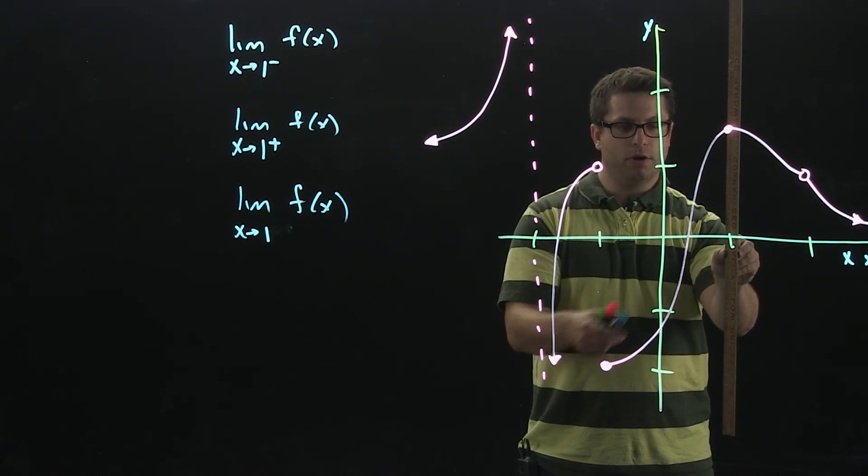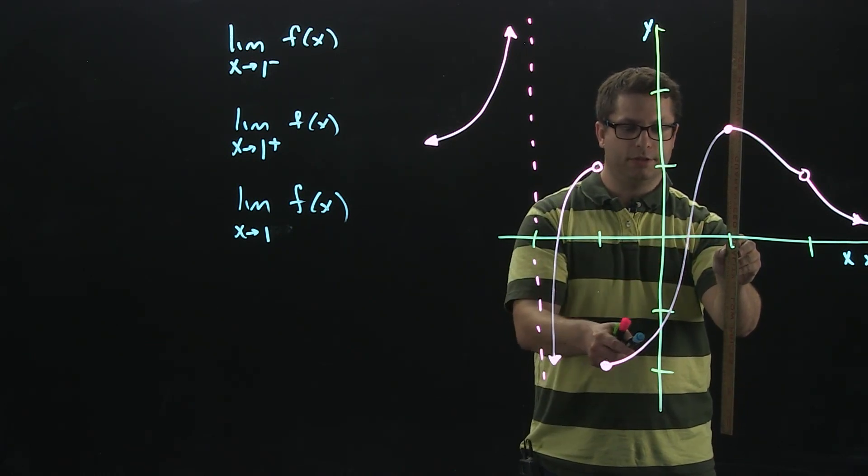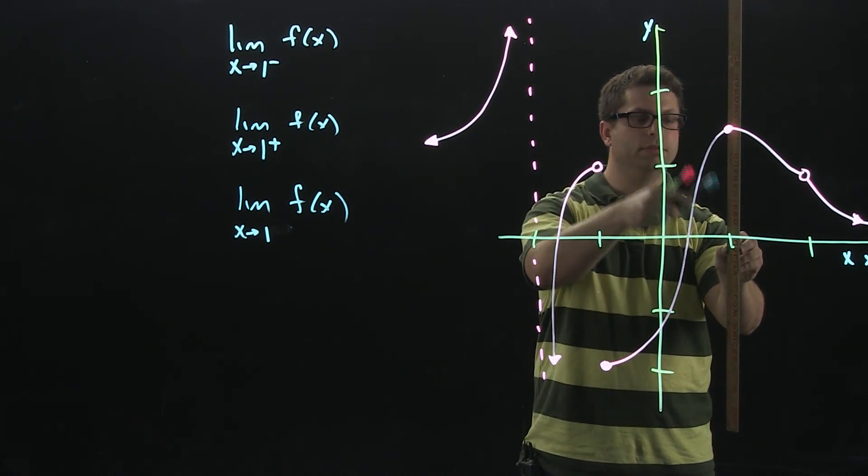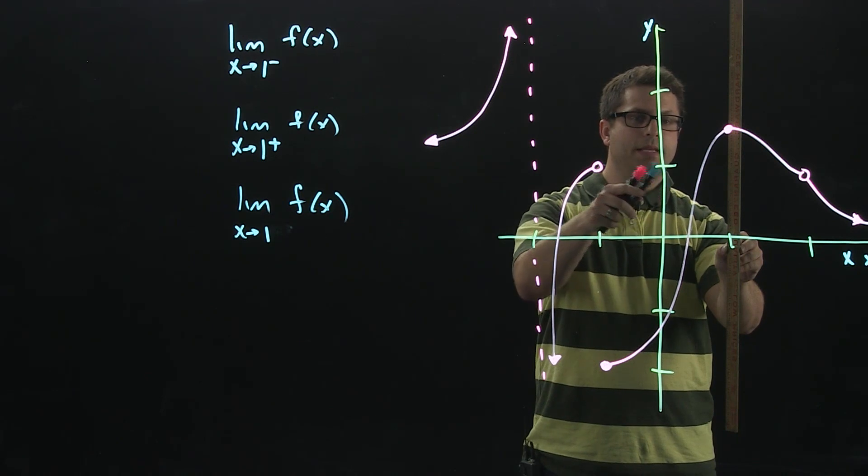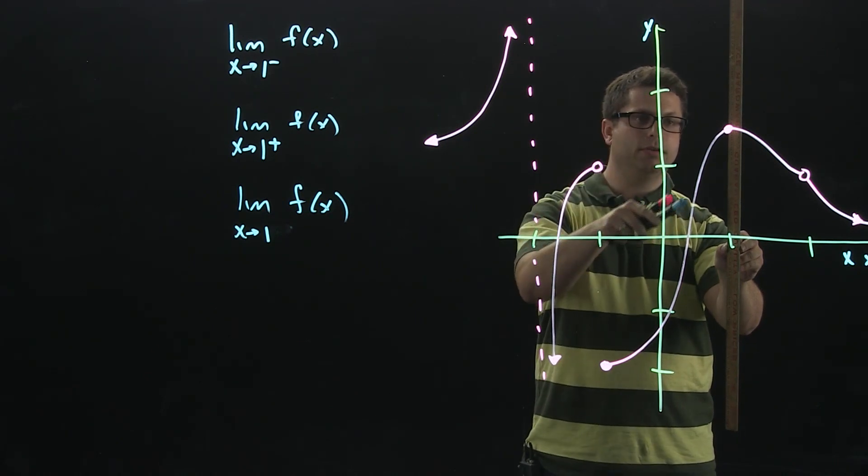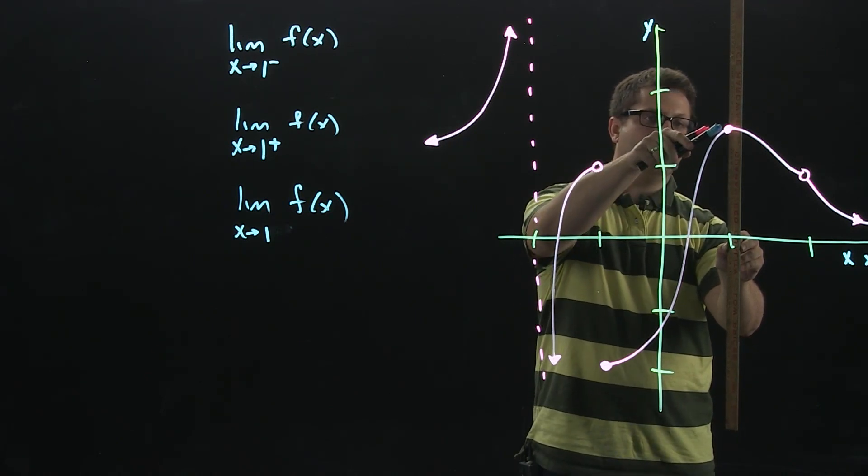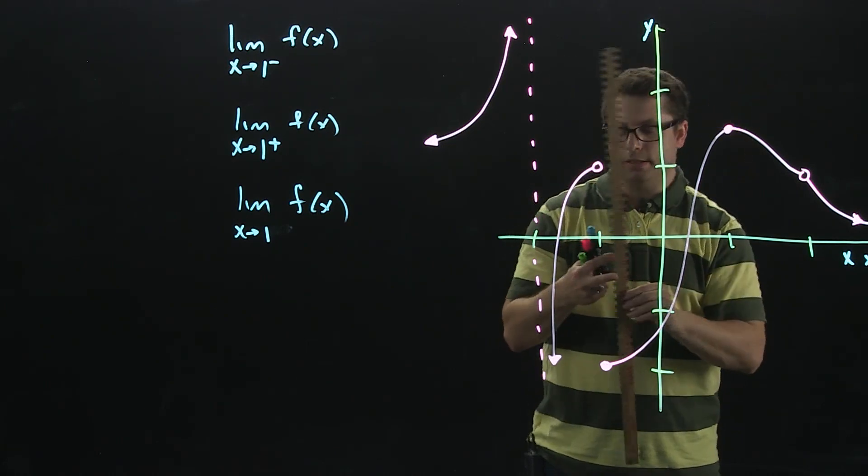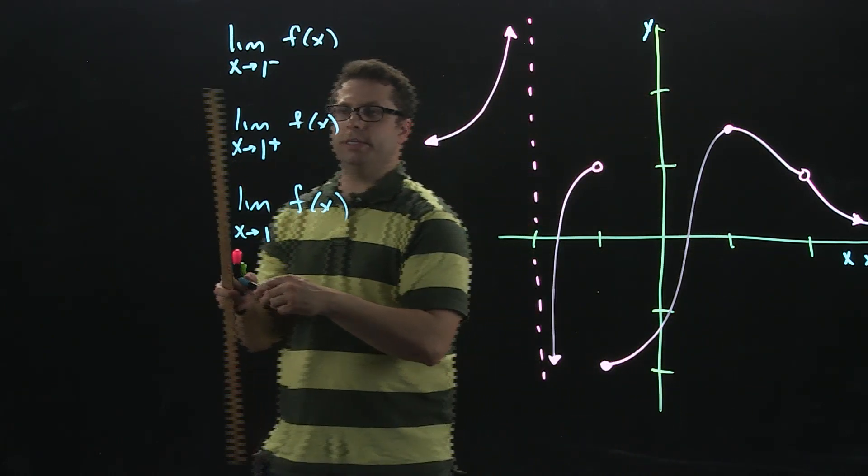As you approach 1 from the left, you're going to trace the graph. Then you're just going to tell me what would you expect the y-value to be when you got to x equals 1. Here's 1 and here's 2. As I approach this point, it looks like it's about 1.5. That's what I'm going to say the left-hand limit is, 1.5.